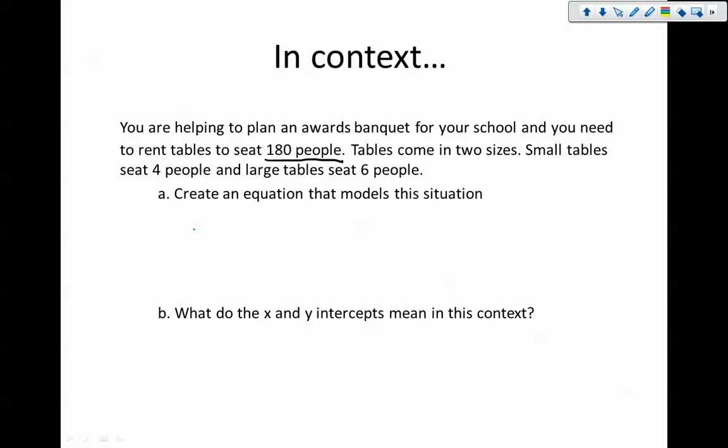So the first thing we need to do is create an equation that models this situation. Well, think about our situation. We've got four seaters plus six seaters. And if we're thinking about how many total people we're going to seat, that's got to sit the total amount of people. Well, I've got 180 people. I can fit six per six-seater table or four per four-seater table. So if I had two four-seaters, I would have eight people there, or three, I would have 12 people. Four, I'd have 16 people. It sounds like I'm always going to be multiplying some number by four.